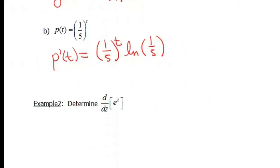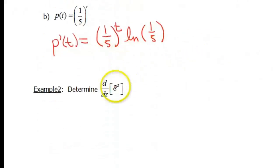All right, next example, I have this different notation again. So this is d over dz of e to the z. So remember that d over dz just means take the derivative with respect to z. So in this case, z is our variable.